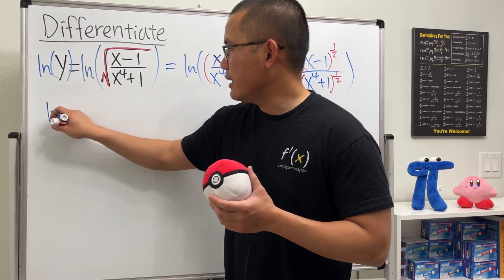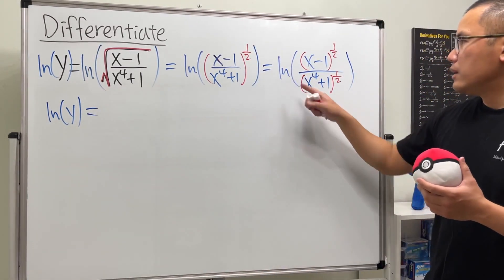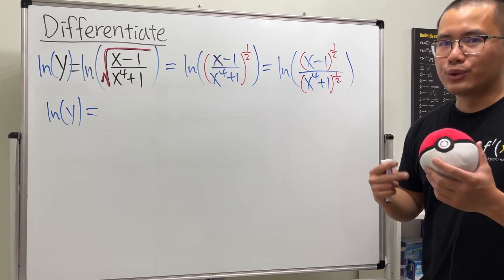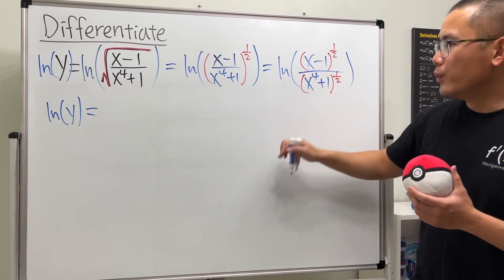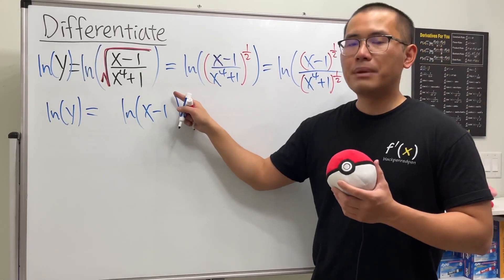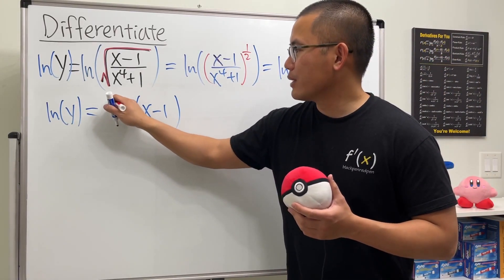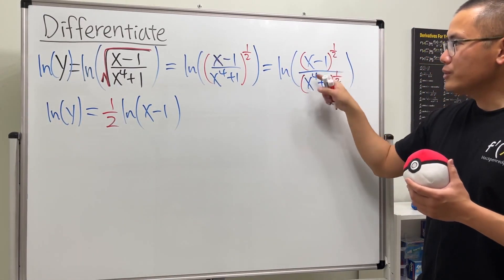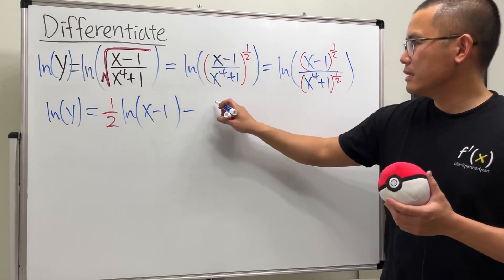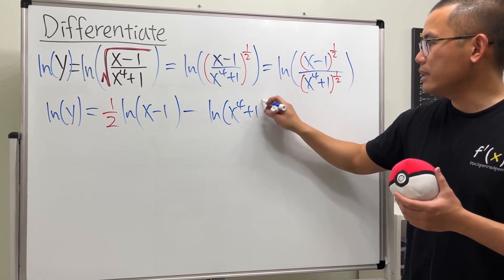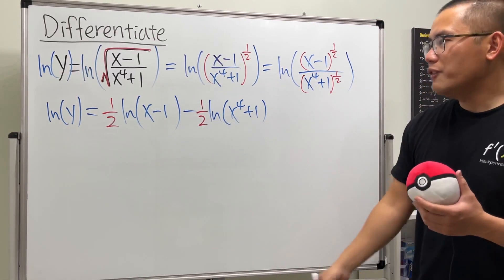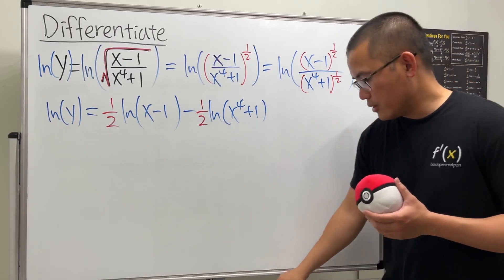So ln y equals — we have ln of the top, and the power can come to the front. We will first have one-half times ln of x minus 1. And since this is a quotient inside the ln, it will be minus ln of x to the fourth power plus 1, again to the one-half power, but the one-half goes in the front thanks to the log property.